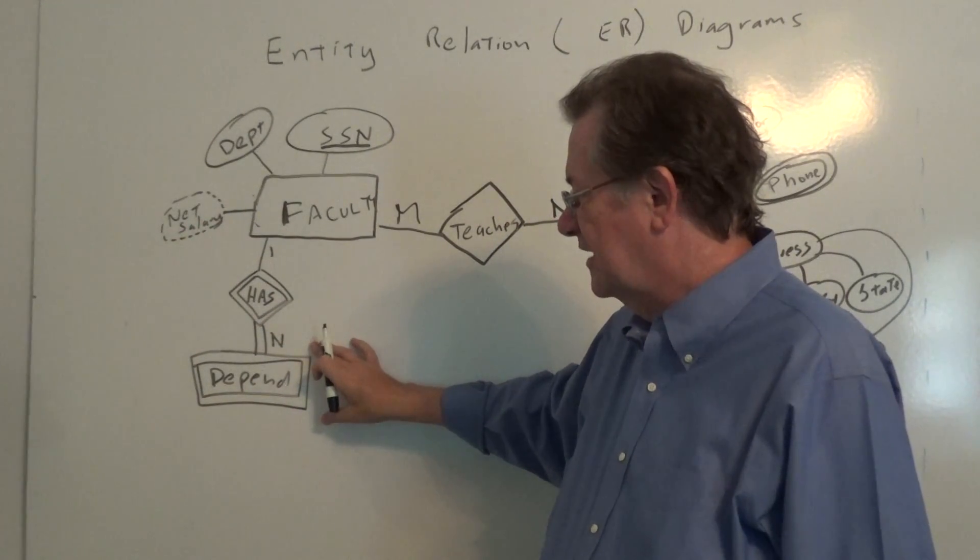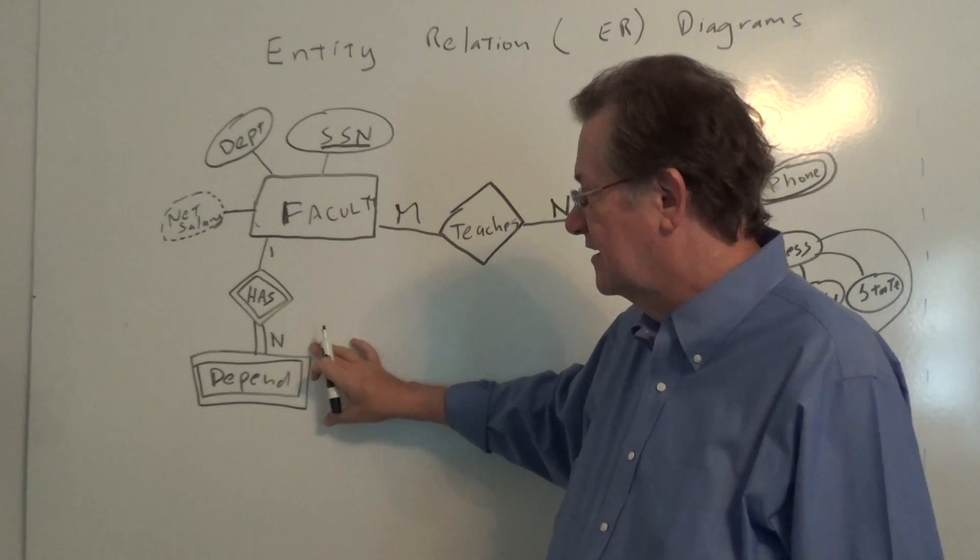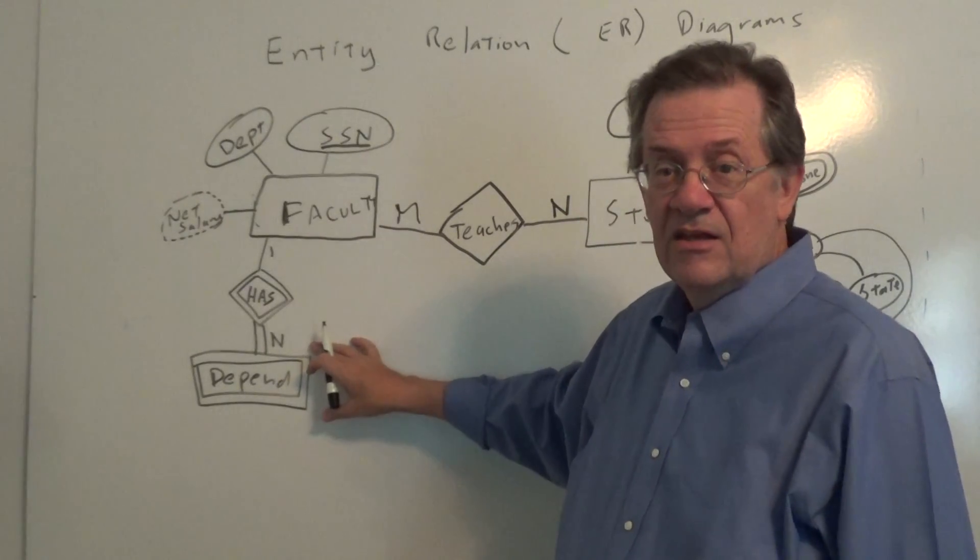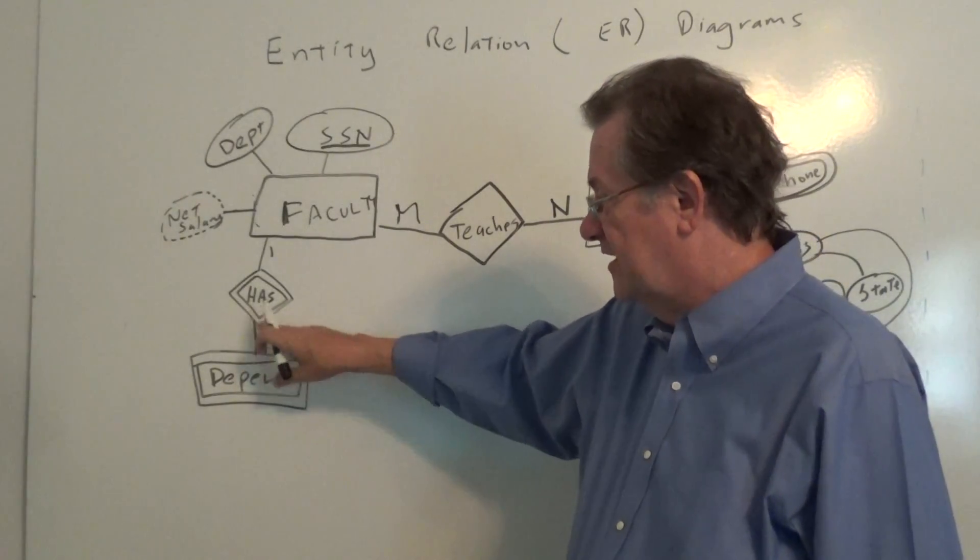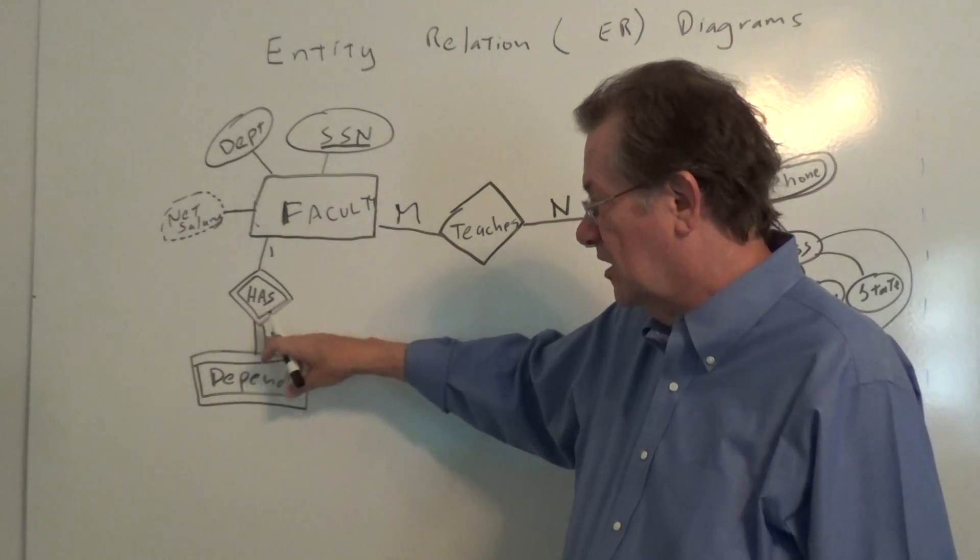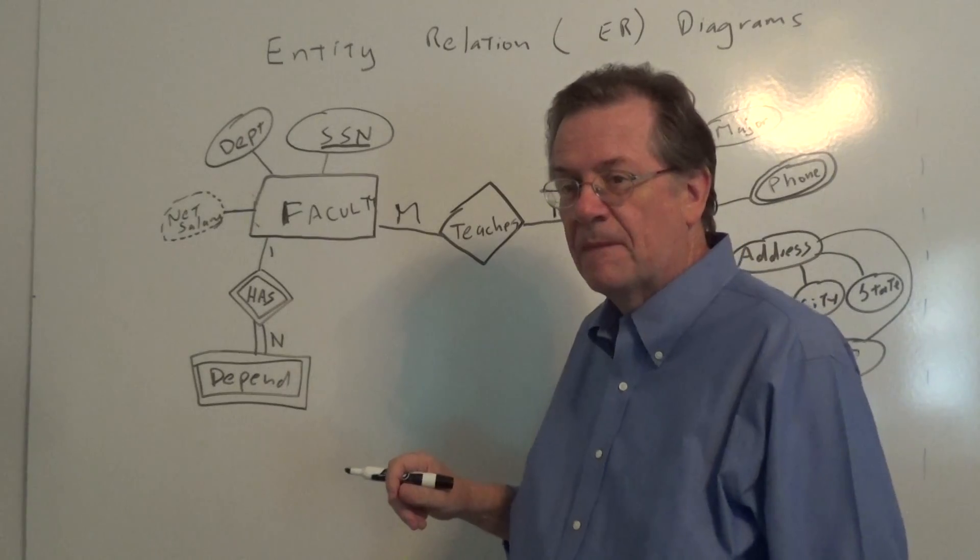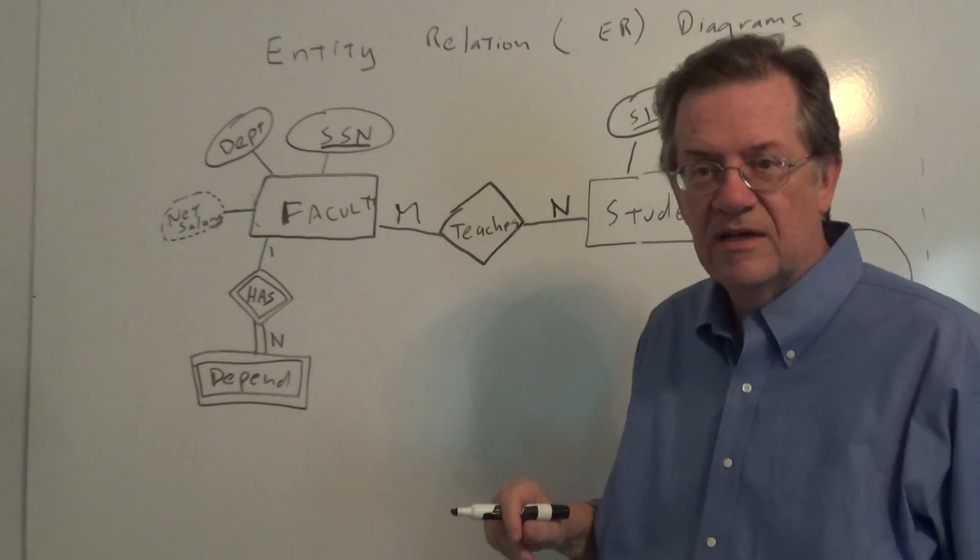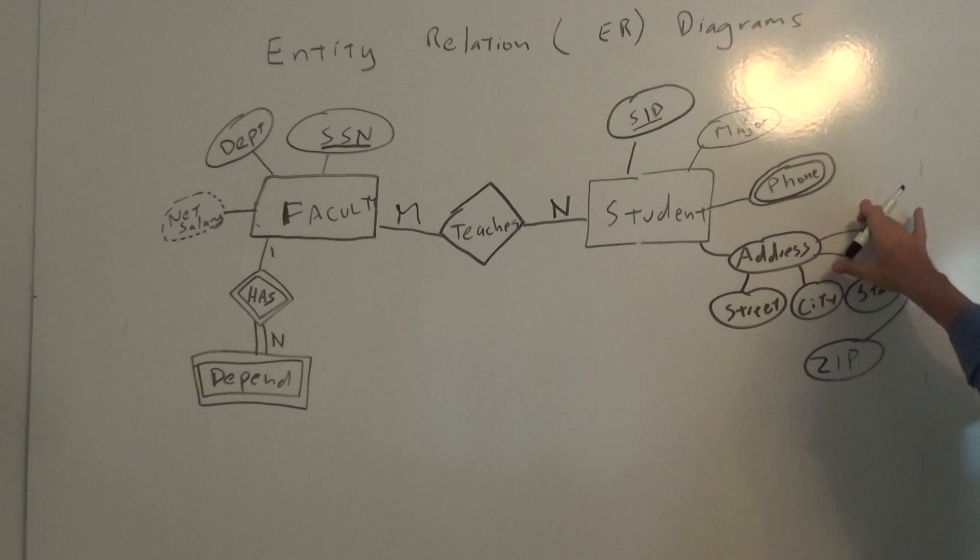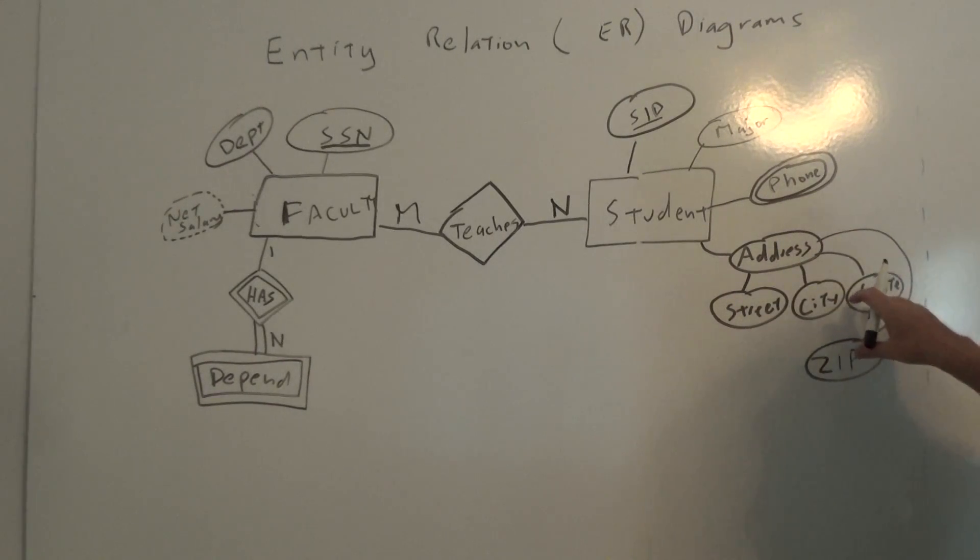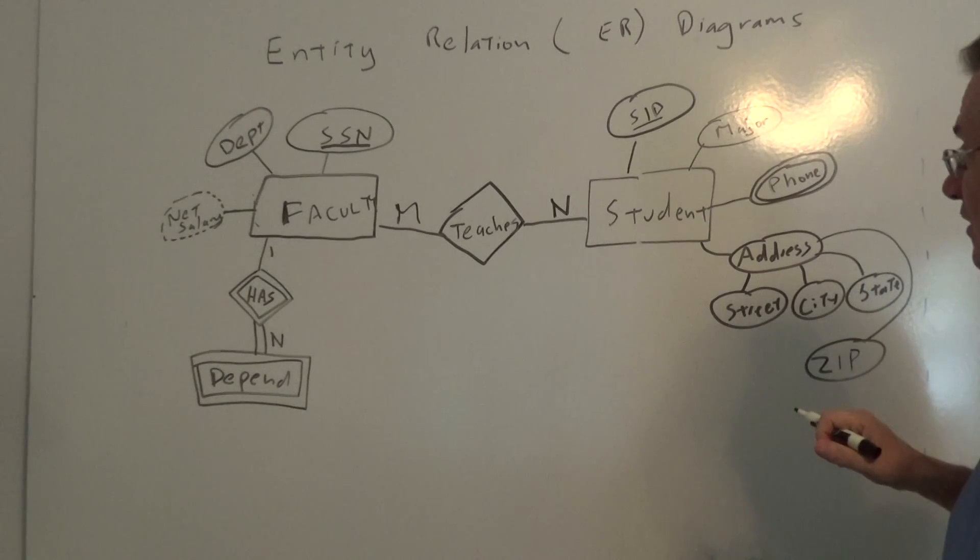If we see a double bar around the entity that's known as a weak entity, otherwise it's a strong entity. We see this as a double line around the bar going to the relation, total participation there. So let's continue on and we saw the composite attribute here, address made of sub-attributes under it, along with the phone number which was a double oval there.